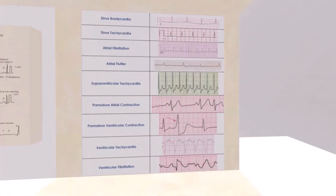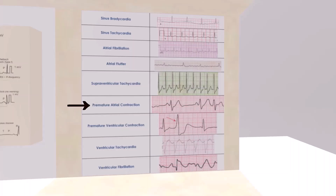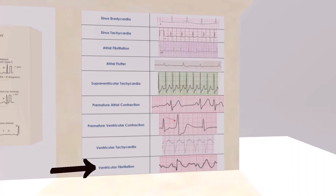In this last room, we see ECGs of various rhythms: sinus bradycardia where the heart rate is slow, tachycardia where it's fast, supraventricular tachycardia, premature atrial contraction, premature ventricular contraction where the ventricle contracts too soon, ventricular tachycardia, and ventricular fibrillation — which looks like random squiggly lines.